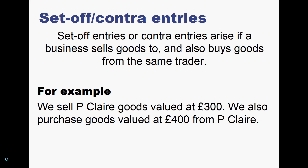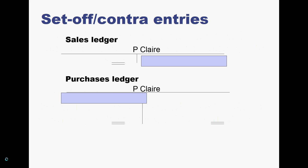We sell to P.Claire a value of £300, so P.Claire is buying from our business, meaning P.Claire in that transaction is a debtor. When we buy from P.Claire for £400, then P.Claire becomes our creditor. Let's look at this information in the ledger — both ledgers: we've got the sales ledger and we've got the purchase ledger, so P.Claire will go into both.